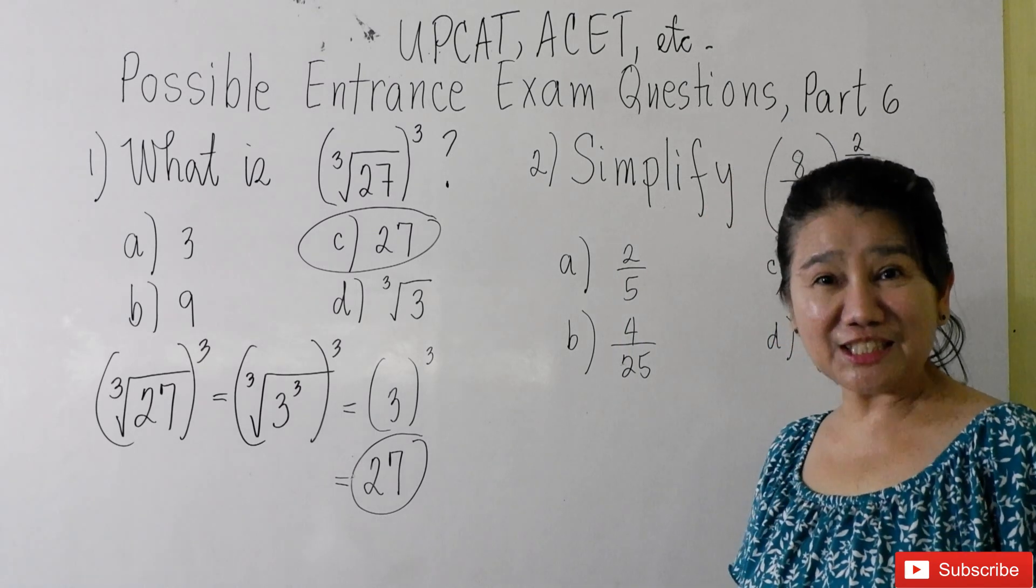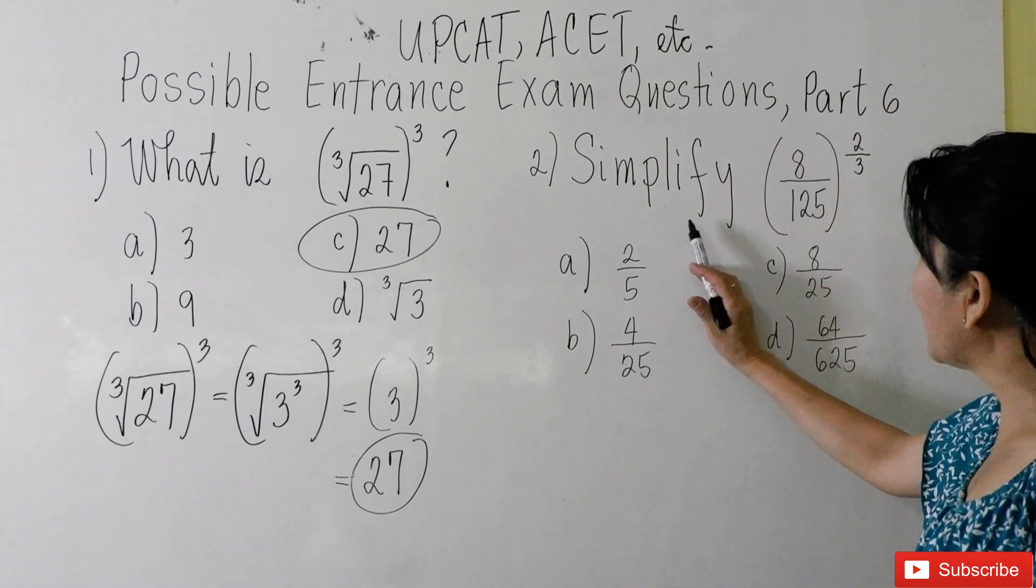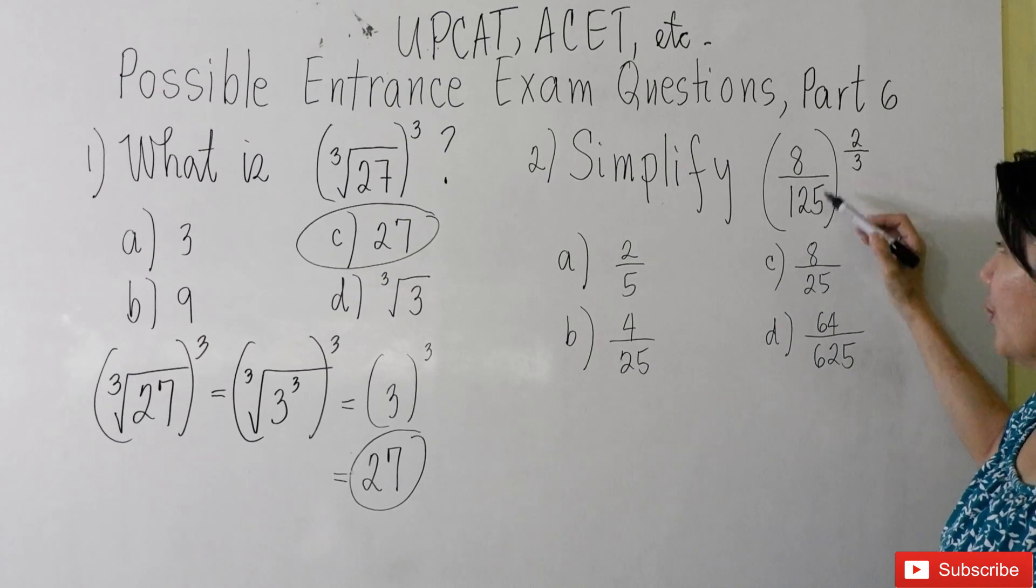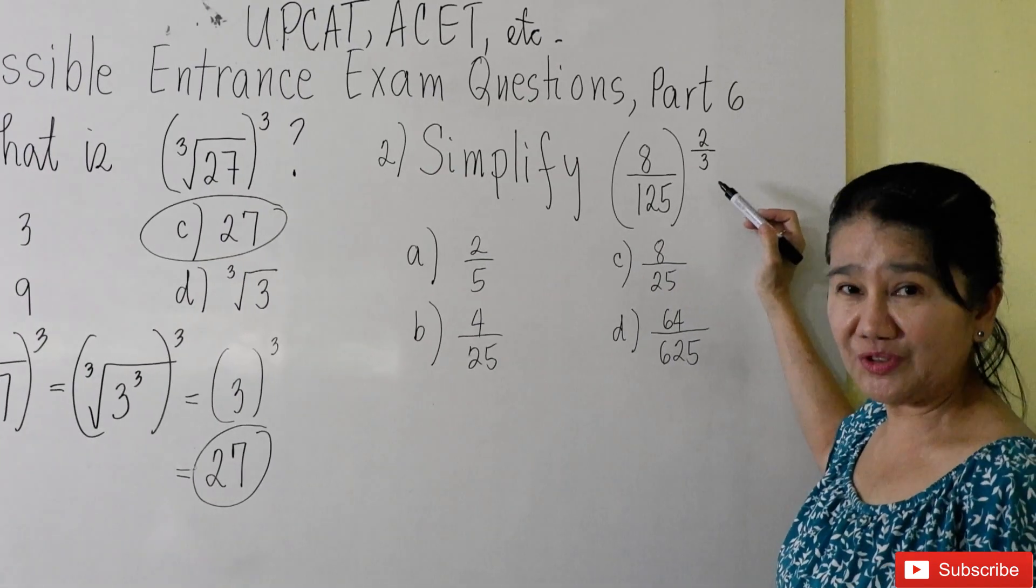Let's move on to the second example. Simplify: eight over 125 raised to the two-thirds.